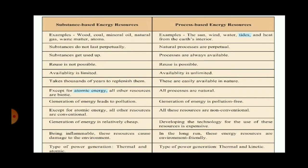Except for atomic energy, all other substance-based resources are conventional — used for a long time — while process-based resources have been used only recently. Generating energy from substance-based resources is relatively cheaper, whereas setting up process-based technology is expensive. Being inflammable, substance-based resources cause damage and pollute the environment, but process-based natural resources are environment-friendly. Types of power generation: substance-based produces thermal and atomic power; process-based produces thermal and kinetic power.